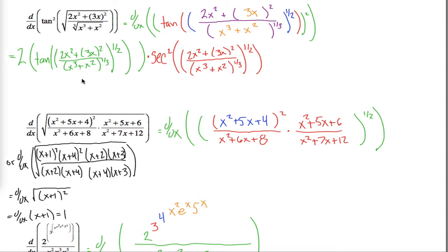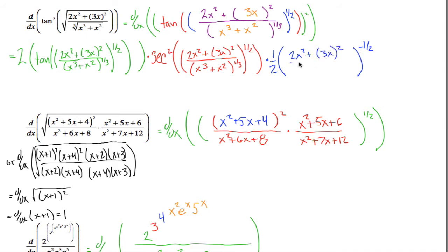The next layer is written in blue — we're taking the square root of something, in other words, something raised to the one-half power. When you take the derivative of something to the one-half power, use the power rule: take that exponent and bring it down in front. If it were x to the one-half, we'd say it's one-half x to the negative one-half. But it's this mess raised to the one-half — specifically 2x squared plus 3x quantity squared divided by x cubed plus x squared to the one-third power. Inside that is another layer in purple, and I see a quotient rule.